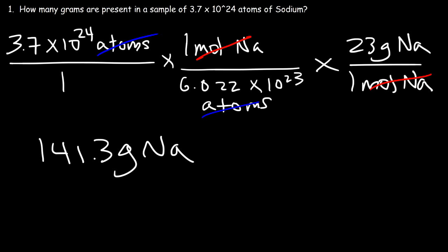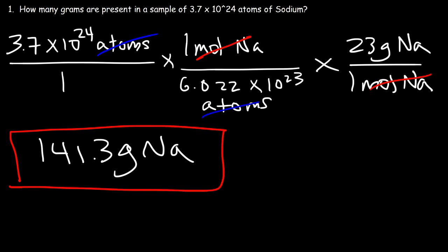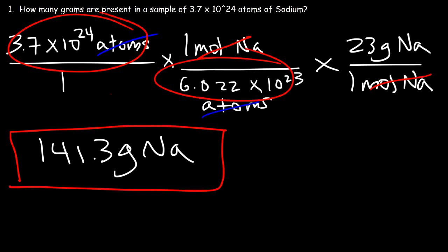To convert atoms to grams: take the number of atoms that you have, divide it by Avogadro's number, and then multiply it by the molar mass of the element. Now granted, some problems will be harder than what we're dealing with now, but progressively I'll increase the difficulty. I want you to understand the basics first.